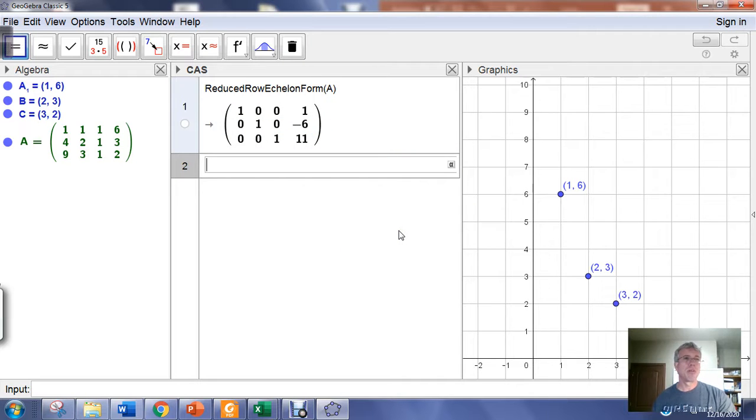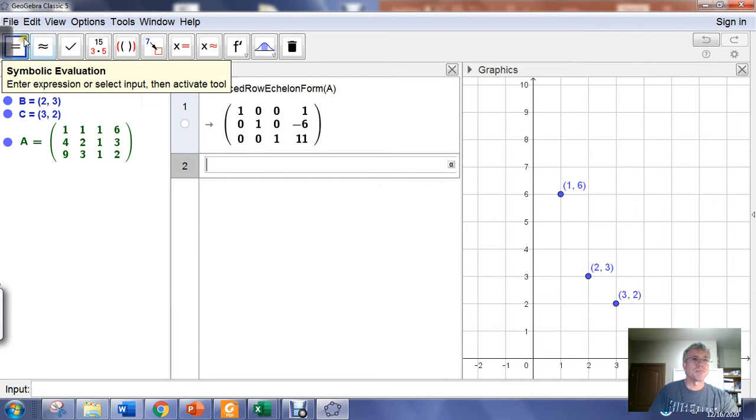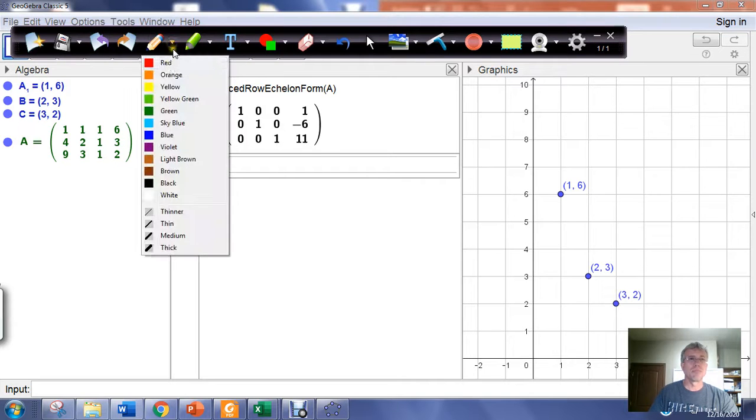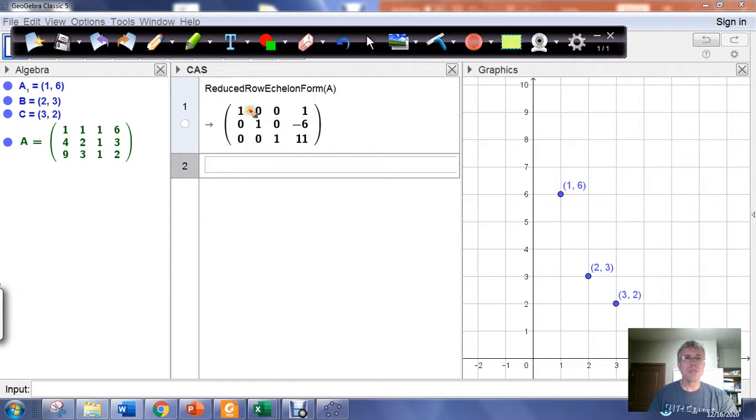Now I need to interpret the results. We had an A column, a B column, and a C column. This is saying 1A = 1, or A = 1. This entry is saying B = -6. And this entry is saying C = 11.